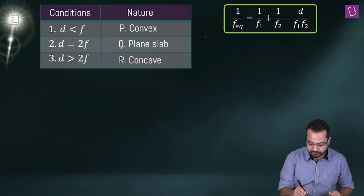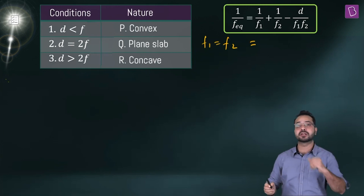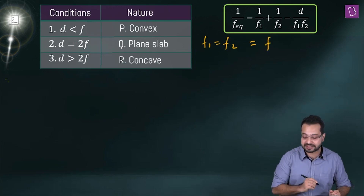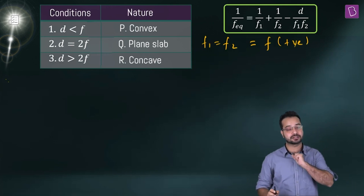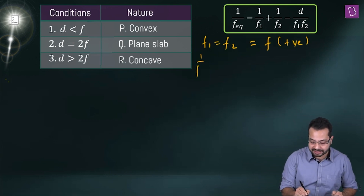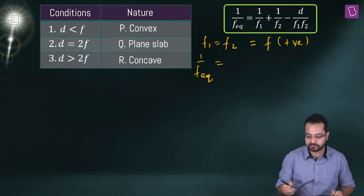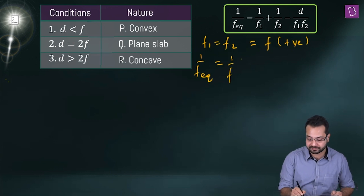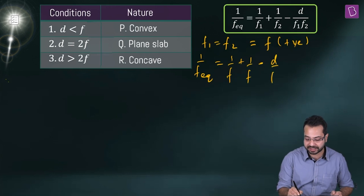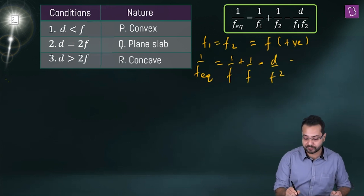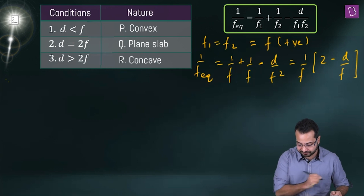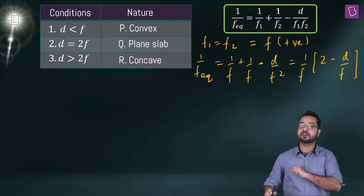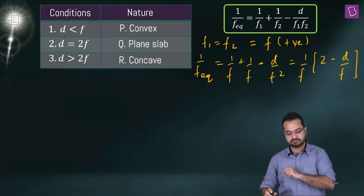Since both lenses are identical, f1 = f2 = f, and f is positive because these are convex lenses. So 1/f_eq = 1/f + 1/f - d/f², which simplifies to (1/f)(2 - d/f). Everything depends on the ratio of d and f.